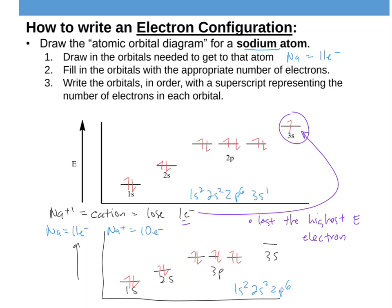The reason we get certain ion charges — plus 1, minus 2, plus 3, etc. — is because nature wants full subshells. Nature doesn't like a half-full 3s; it either wants to add an electron to fill it or remove the electron so you only have full subshells. Here we have a full 1s, full 2s, and full 2p subshell. Stable ions tend to have full subshells — this is called the noble gas rule or octet rule.